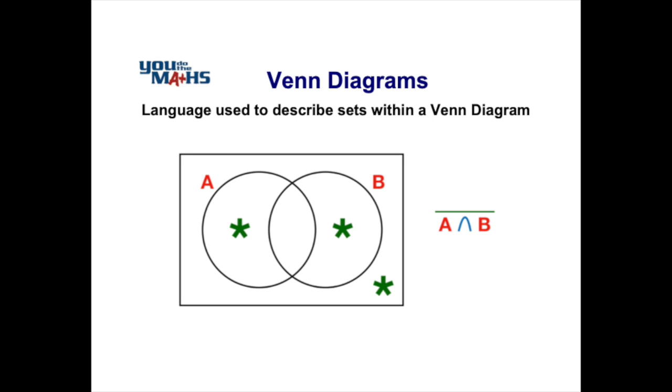We can have the complement of the intersection of A and B. Because the intersection refers to the two circles overlapping, just the middle bit of the Venn diagram, the complement refers to everything outside of that, and again we've indicated those with the asterisks in green.